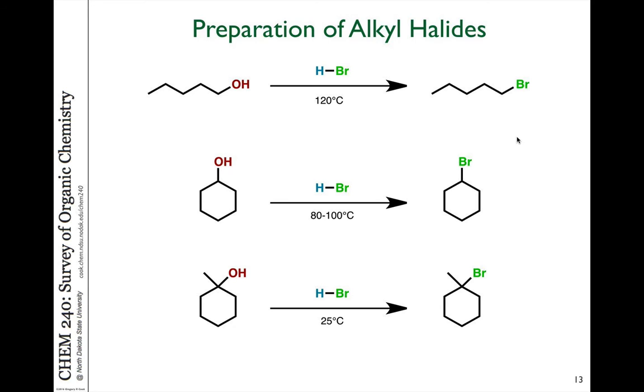We can do this substitution on all different kinds of alcohol substitutions. You can see that we have a primary alcohol, and if we heat it to 120 degrees in the presence of HBr, we can do the substitution of the OH for the Br minus with the byproduct being water. The secondary compound requires a little bit less temperature but also does the reaction. However, the tertiary alcohol undergoes this reaction at room temperature, so it's much easier when it's tertiary.